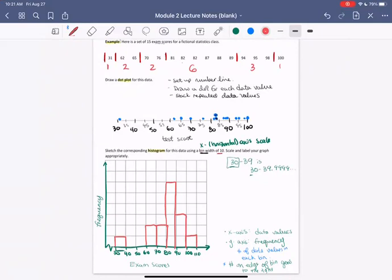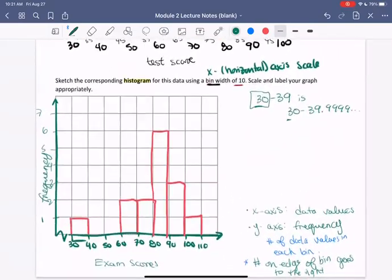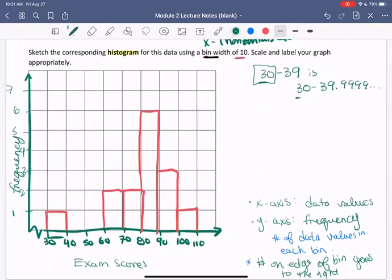So one final touch here that I want to make is that I need to label my frequency axis. So the first tick mark is one, two, three, four, five, six, seven. So it's important to label your tick marks just because in some cases you might have tick marks representing more than one if you have a lot of data. All right. Thanks for watching. Great work.